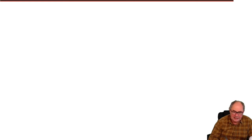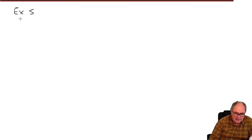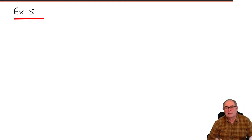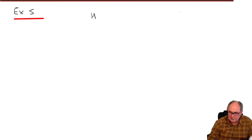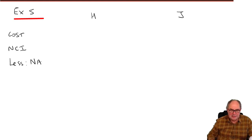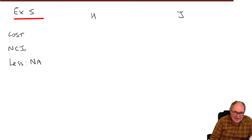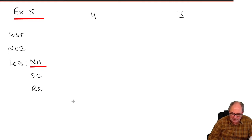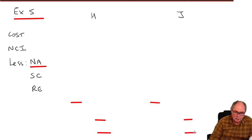We might try to be a little bit efficient and do this using two columns, but in the exam I think it probably adds extra hassle, so I'd perhaps do them separately, because you don't want to spend ages formatting stuff. What I need to know for both is the cost and the NCI, less for the subsidiary its net assets. We'll have to work out the net assets by looking at the share capital and reserves or retained earnings at acquisition.